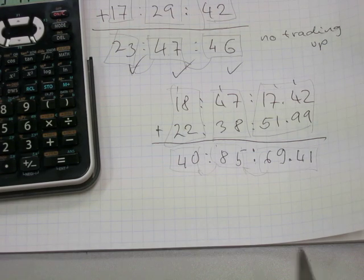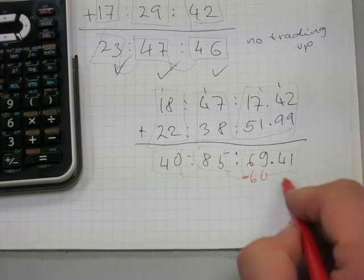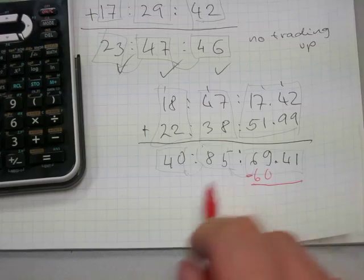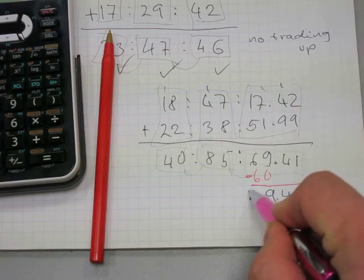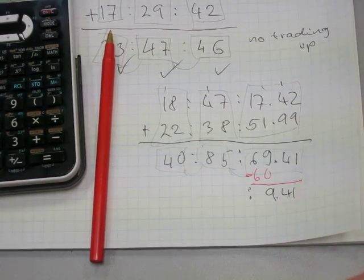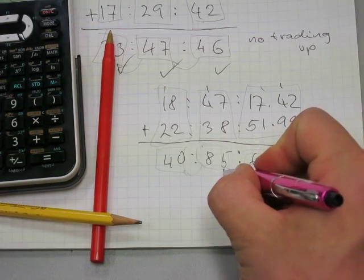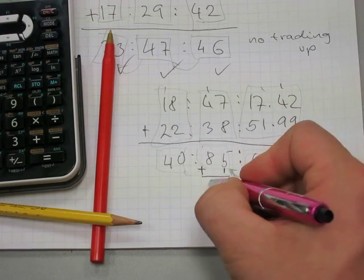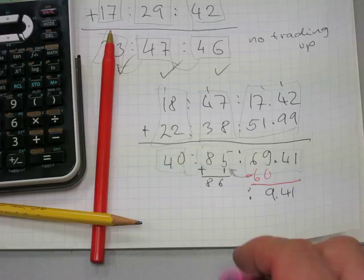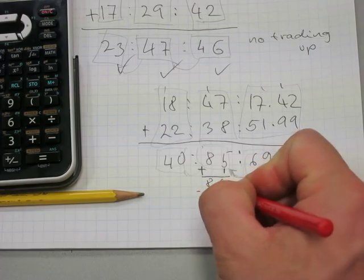Let's trade. We subtract 60 from the 69.41 seconds, leaving 9.41 seconds. Those 60 seconds trade up to the minutes column as 1 minute, giving us 86 minutes. But 86 minutes is again too many — we can take away 60 from it.